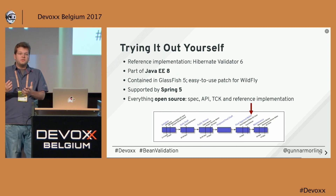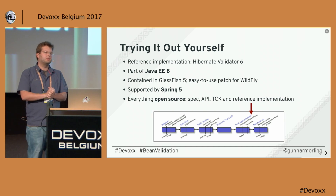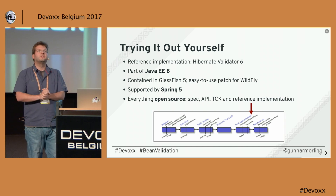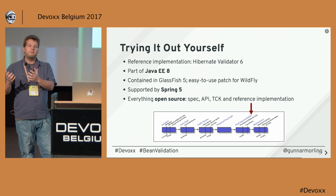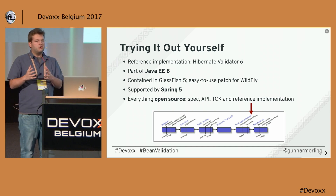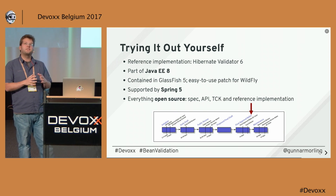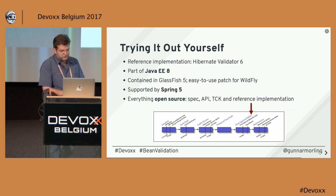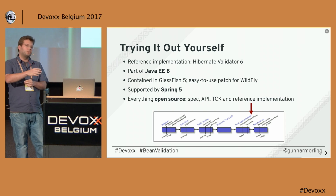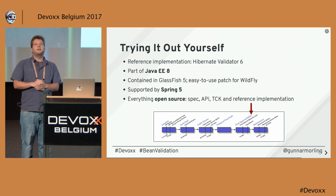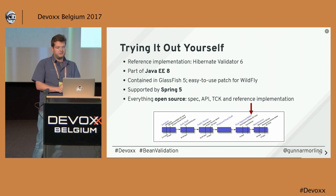To try it yourself: the spec is finalized and is part of Java EE 8, released a couple of weeks ago. You can use the Java EE 8 reference implementation, GlassFish 5. The reference implementation is Hibernate Validator 6. We did the final release and since then have put out multiple micro-releases with bug fixes and, importantly, significant performance optimizations — Bean Validation 2 and its reference implementation are often much faster than Bean Validation 1. If you use WildFly, it's not in WildFly 11 yet, but we provide a patch file to update an existing WildFly instance. If you're more of a Spring person, Spring 5 also supports Bean Validation 2.0.